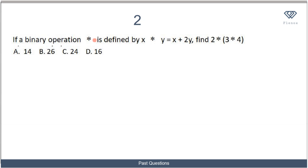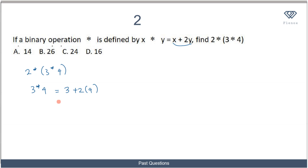Now let's move on to the next question. We are told that a binary operation star is defined by x★y = x + 2y. Find 2★(3★4). As we know, we first deal with what is in the bracket, so we first evaluate 3★4. Using the formula x★y = x + 2y, my x value is 3 and my y value is 4, giving 3 + 2(4) = 3 + 8 = 11.